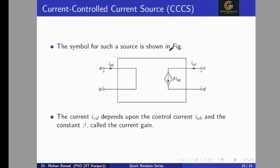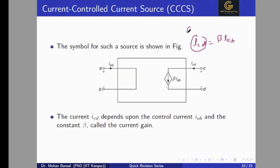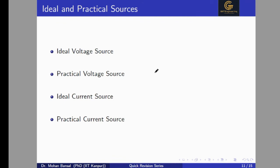The fourth type is the Current Controlled Current Source. In this case, the current source (arrow inside the diamond) has its value controlled by an input current. Icd = β·Iab, where Icd is the output current source and Iab is the controlling input current. Here β is the current gain, defined as the ratio of Icd to Iab, and it is a unitless quantity.